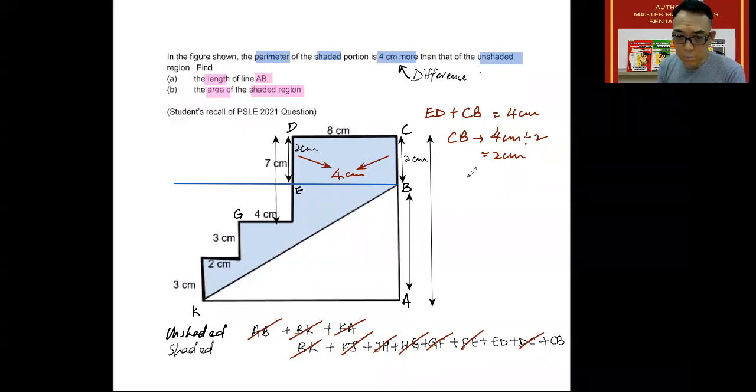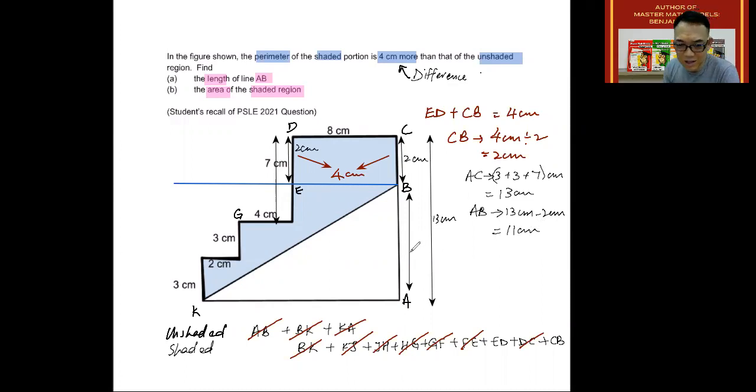So I'm going to do that right now. So let's start with AC. And AC is three plus three plus seven centimeters, giving you 13 centimeters. So I know that this is 13, and then I take away two to get this. So AB is 13 subtract two, giving you 11 centimeters. And that is the answer for the first part, A.